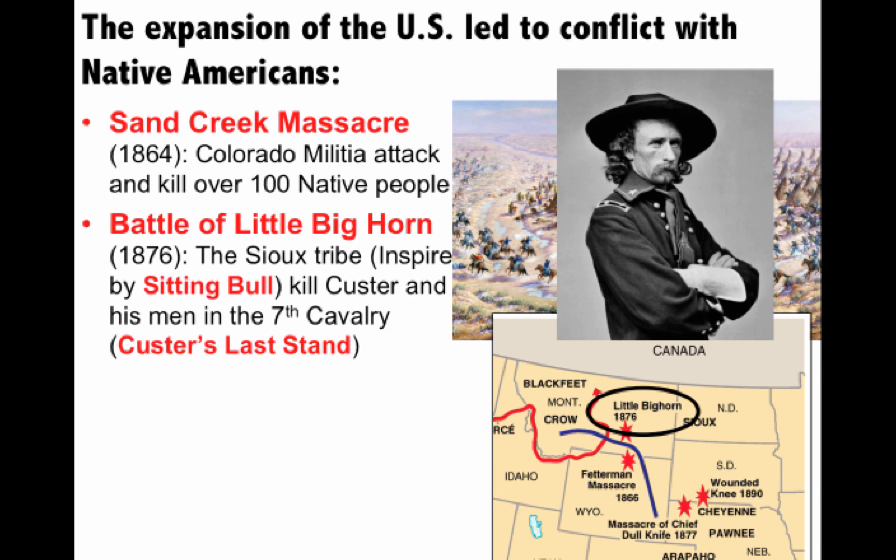Another famous example of this conflict is the Battle of Little Bighorn in 1876. Members of the Sioux Tribe, inspired by their leader Sitting Bull, defeated a U.S. Army force — General Custer and his men of the 7th Cavalry were killed in what became known as Custer's Last Stand. It was a rare defeat for the Americans, but shortly after, the U.S. Army came in and crushed Native resistance in the Dakotas and Montana.